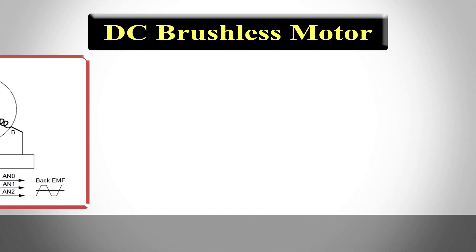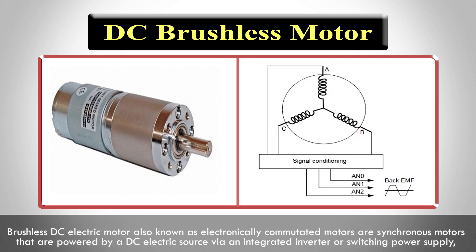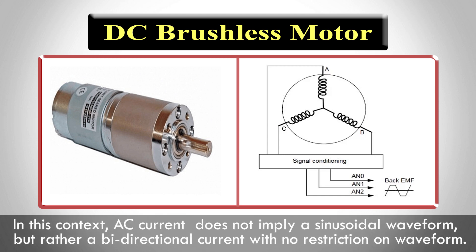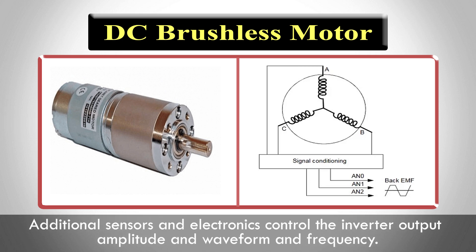DC brushless motors, also known as electronically commutated motors, are synchronous motors powered by a DC electric source via an integrated inverter or switching power supply, which produces an AC electric signal to drive the motor. In this context, AC current does not imply a sinusoidal waveform, but rather a bidirectional current with no restriction on waveform. Additional sensors and electronics control the inverter output amplitude, waveform, and frequency.